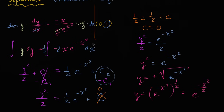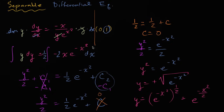So y equals e to the negative x squared over two is the particular solution that satisfies the initial conditions for this original differential equation. Because we could algebraically separate the y's and dy's from the x's and dx's, we were able to integrate both sides and use the initial condition to find the particular solution.